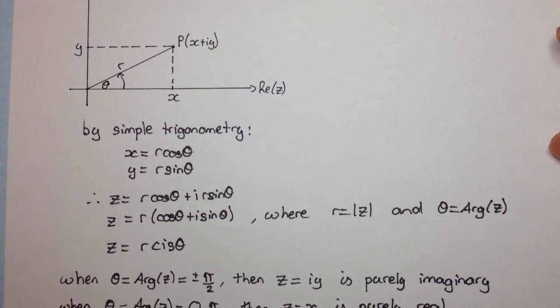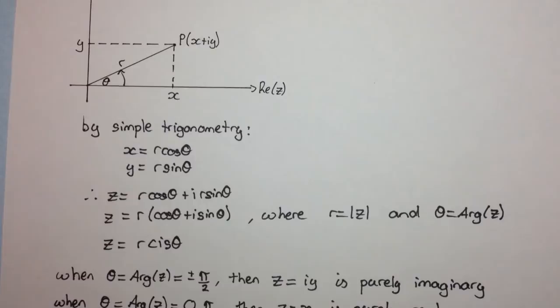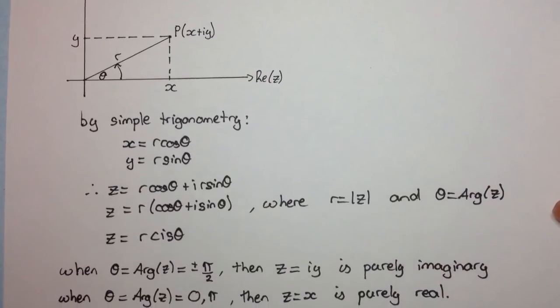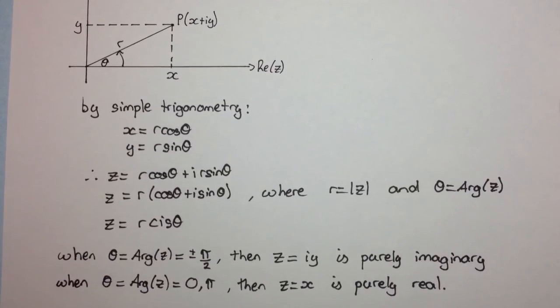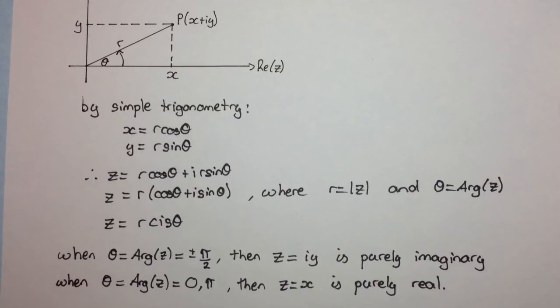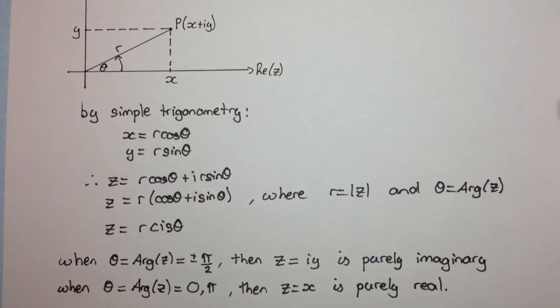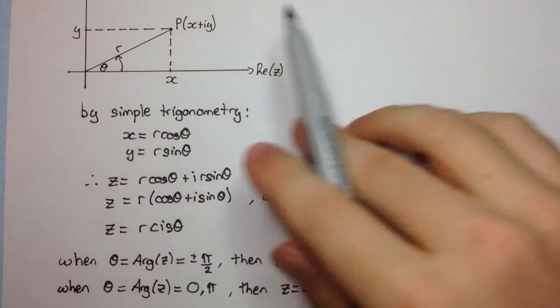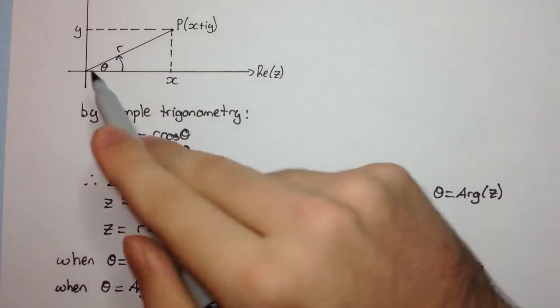We can see a similar thing. When theta is 0 or pi, then our complex number is purely real. Right, so if it's purely real, then we're back to our real numbers. And we can see on this axis, if theta is 0, then we have all these positive real numbers.